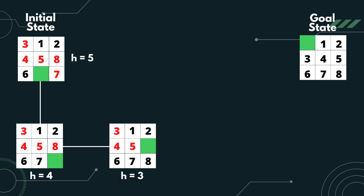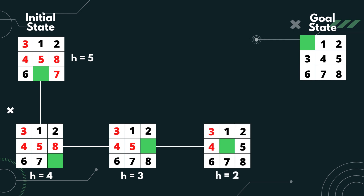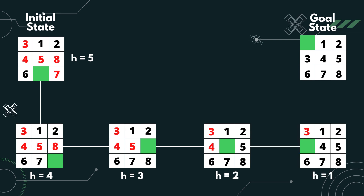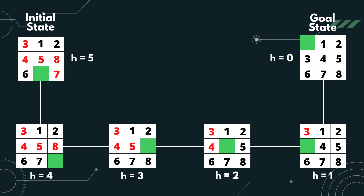Now, the option is either to move 8 downwards or move 7 to the right. However, 7 is already at the correct place. Therefore, it's best to move 8 downwards. H is now reduced to 3. Both 2 and 8 are already at the correct place, so the best move is to move 5 to the right. Now H becomes 2. Since all numbered tiles are already positioned correctly except 4, we move 4 to the right to reduce H to 1. Finally, there's only one move left, which is to move 3 downwards. H now becomes 0, which means we've reached the goal.